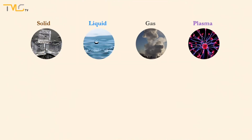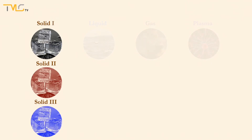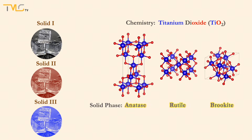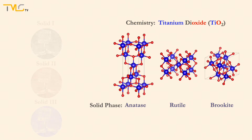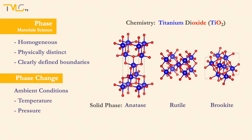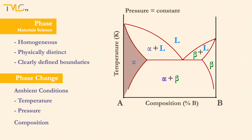A material can have one of the four physical phases, and some materials can have more than one solid phase. In other words, they can exhibit different crystal structures while the chemical composition of the material stays the same. Phase in materials science defines a homogeneous and physically distinct part of a material separated from the surroundings by a clearly defined boundary. The phases present in a material can be manipulated by changing ambient parameters or the composition of the material. In other words, phase diagrams are employed as maps, showing the stability regions of the phases for various ambient conditions and compositions for a given material.